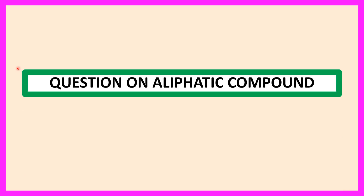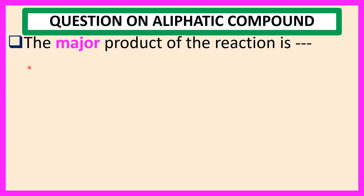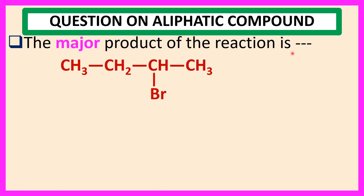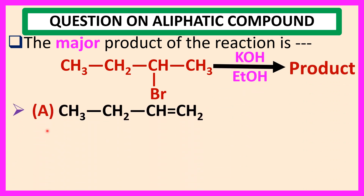Welcome everyone. Question on aliphatic compound. The major product of the reaction is when 2-bromobutane reacts with KOH in presence of ethanol. The choices are A,